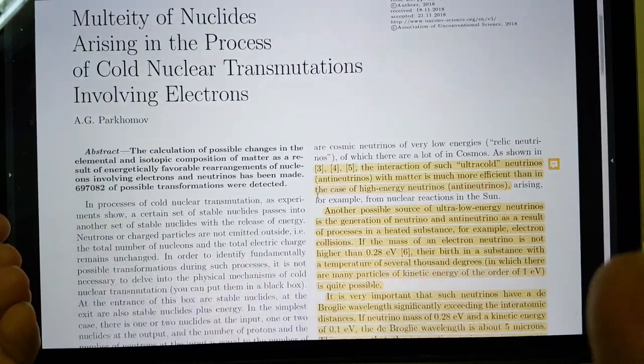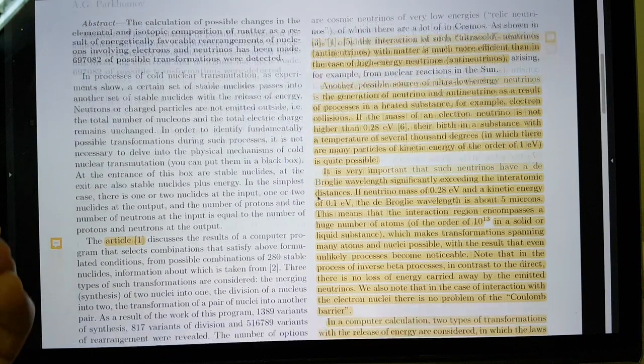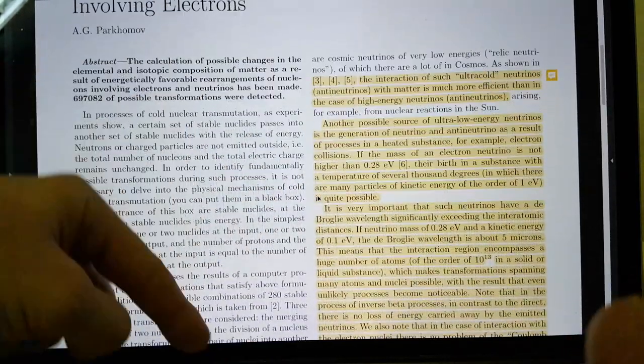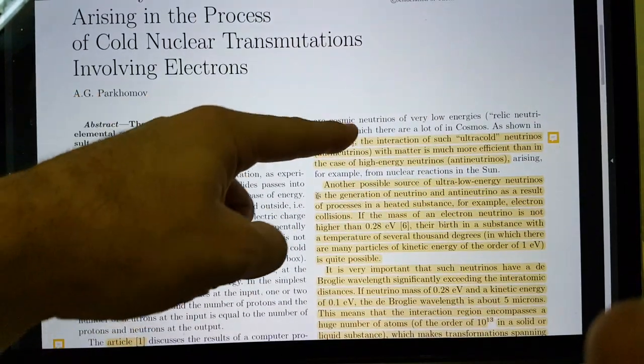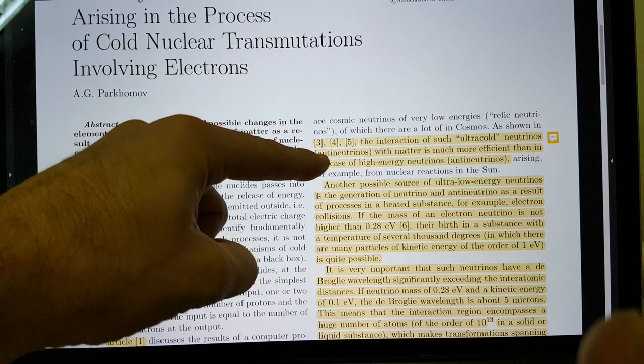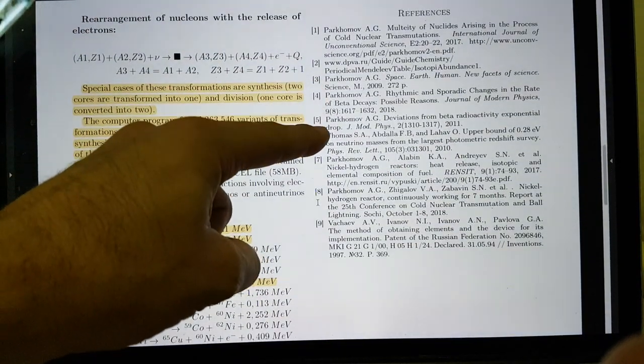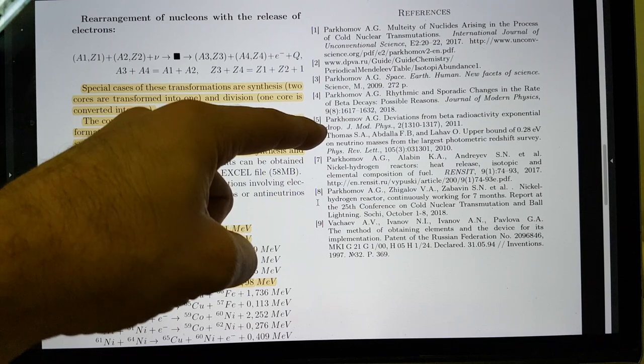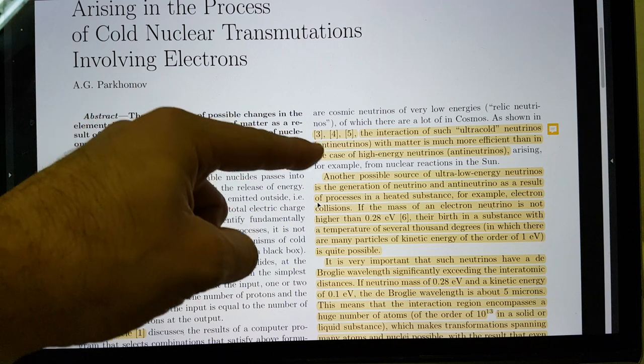Why can he say this with confidence? He says that, first of all, these are cosmic neutrinos. He's talking about where the possible neutrinos and antineutrinos can come from. He says, first, there are cosmic neutrinos of very low energies, relic neutrinos, of which there are a lot in the cosmos, as shown in references 3, 4, 5. These are all his work. He worked over decades to study the effect of cosmogenic neutrinos. He is basically the world's expert on this process. He's saying, the interaction of such ultra-cold neutrinos and antineutrinos with matter is much more efficient than in the case of high-energy neutrinos or antineutrinos arising, for example, from nuclear reactions in the sun.